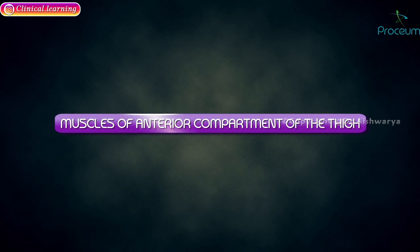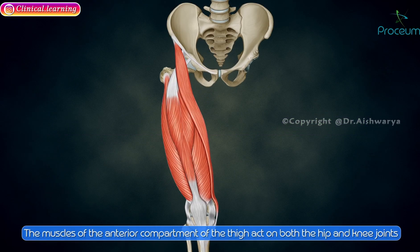Muscles of the anterior compartment of the thigh. The muscles of the anterior compartment of the thigh act on both the hip and the knee joints.